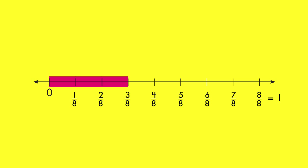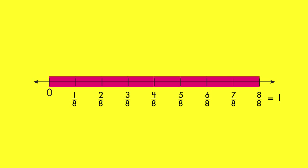The fraction six-eighths names six parts of the whole. The fraction eight-eighths names all parts of the whole. It is equal to one.